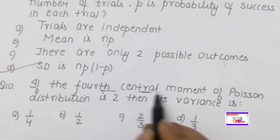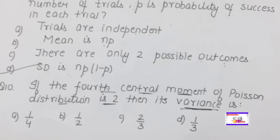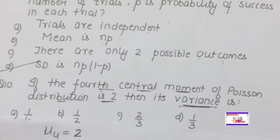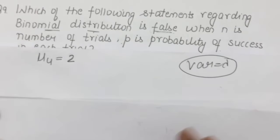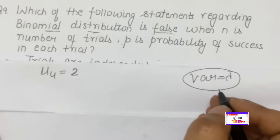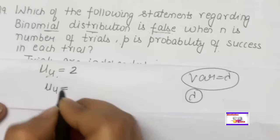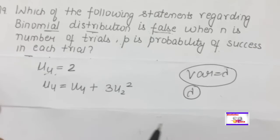If the fourth central moment of the Poisson distribution is 2, find the variance. This is a very good conceptual question. Key properties: (1) Poisson distribution is discrete; its mean and variance are both equal to λ. (2) All cumulants of the Poisson distribution are equal to its parameter λ. We know that μ₄ = κ₄ + 3κ₂², where κ denotes cumulants. Since all cumulants of Poisson equal λ, substitute: μ₄ = λ + 3λ².